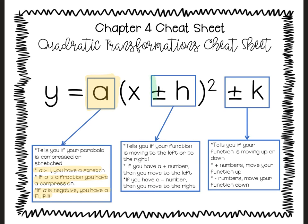When we're looking at our h value, this was the one where we had to think opposite — this one is tricky. The h tells you if the graph is moving left or right, but knowing which direction is always the hardest part. If you see a plus three or plus any number, that's going to tell you to move to the left — think opposites. If you see a minus number, you're going to be moving to the right. It's opposites. I know it's weird, but it's exactly what you need.